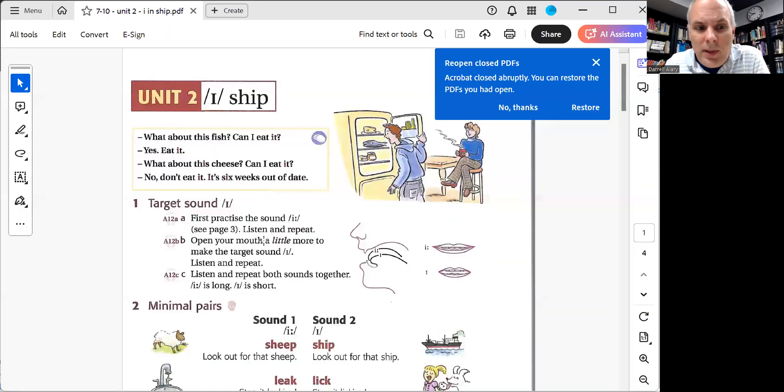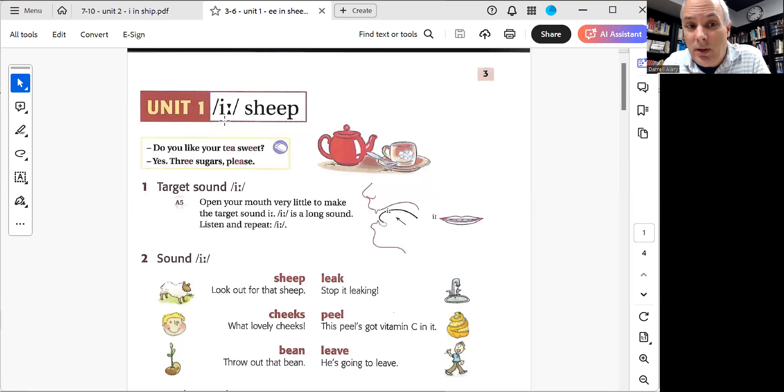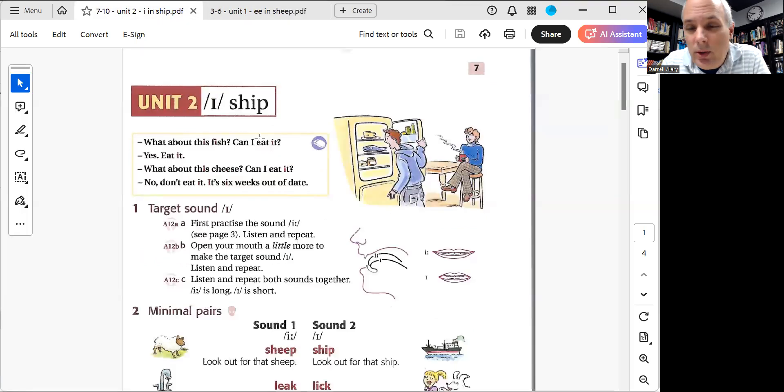Let's look at what we got today. Unit 2. Please remember that for Unit 1, we did the long sound here, the E, sheep. This little thing here is telling you it's going to be a long sound, the triangle on top of a triangle. And then today we're going to do I, ship.